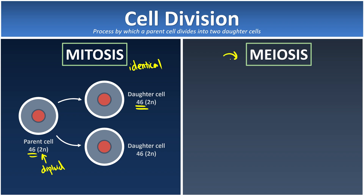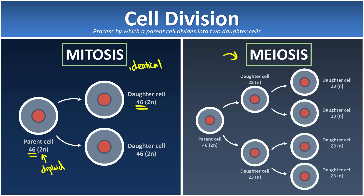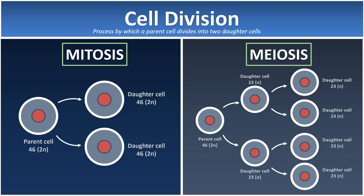On the other hand, for meiosis, it's very important to produce gametes like sperm and ovum. If we have a parent cell with 46 chromosomes, in meiosis it undergoes cell division two times. After meiosis, it will produce four daughter cells. These daughter cells are non-identical, and the number of chromosomes is only half compared to their parent cell.